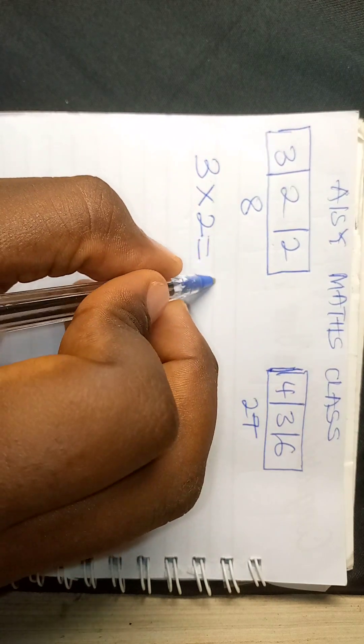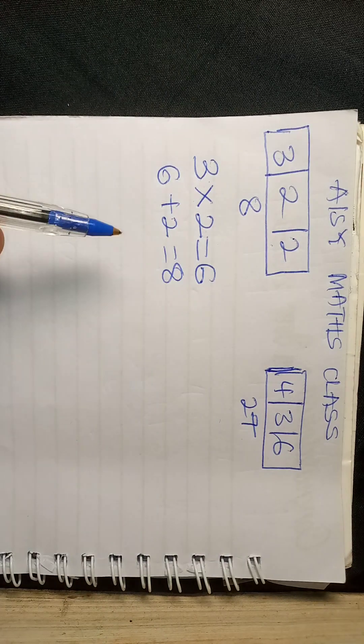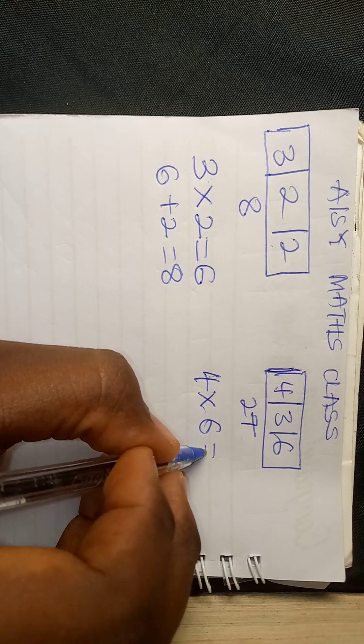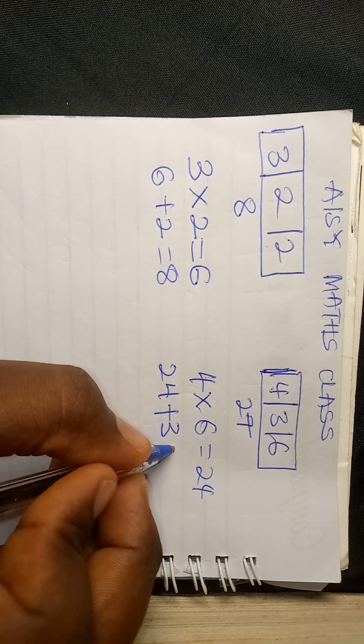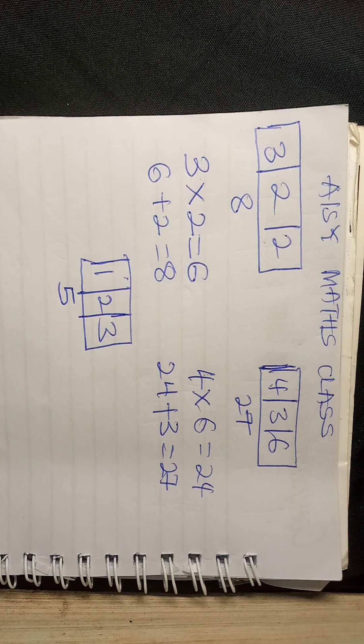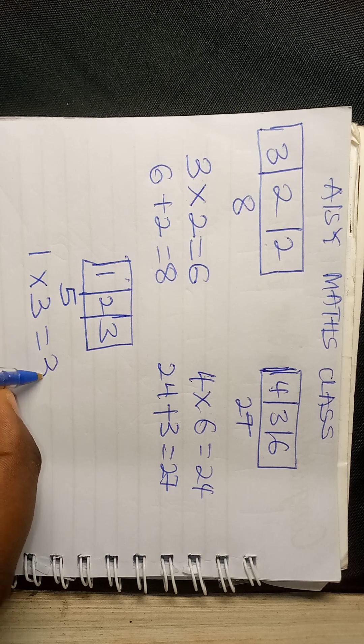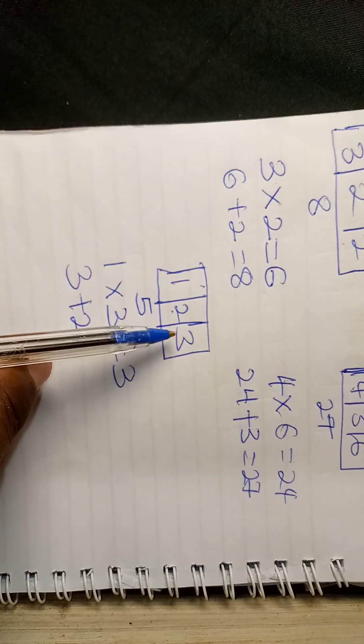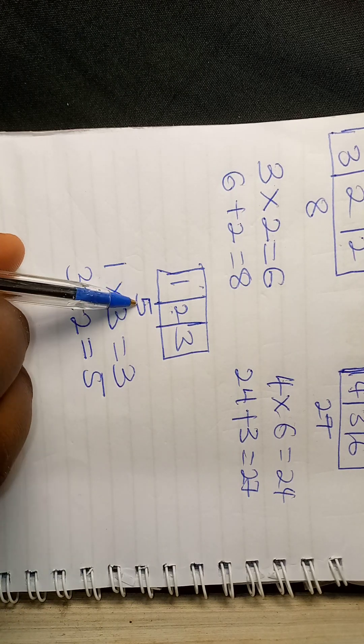Then for this, it's 4 times 6 equals 24, 24 plus 3 is 27. For the third example, it was 1 times 3 equals 3, then 3 plus 2 which is at the middle, 3 plus 2 equals 5. So that's that.